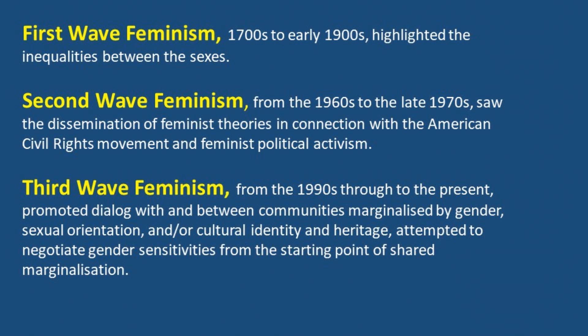Writers such as Alice Walker have promoted dialogue with and between communities marginalised by gender, sexual orientation, and cultural identity and heritage. In an age when gender binaries have faced increasing scrutiny and in some quarters rejection, feminism has attempted to negotiate these sensitivities from the starting point of shared marginalisation. Although there are three waves of feminism and differences in how feminist theory is applied, certain concerns emerge as central to feminist literary theory.